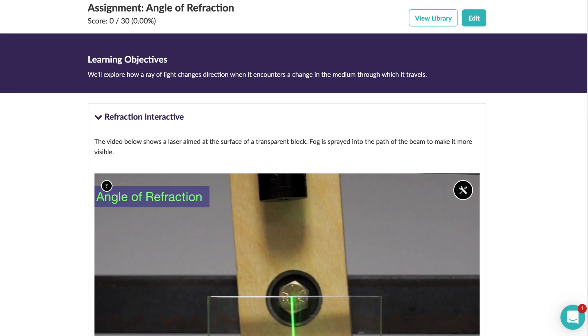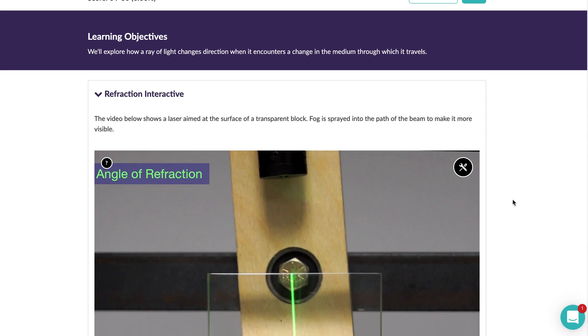Pivot angle of refraction assignment. For our learning objectives, we'll explore how a ray of light changes directions when it encounters a change in the medium through which it travels. We've learned a little bit about this before.